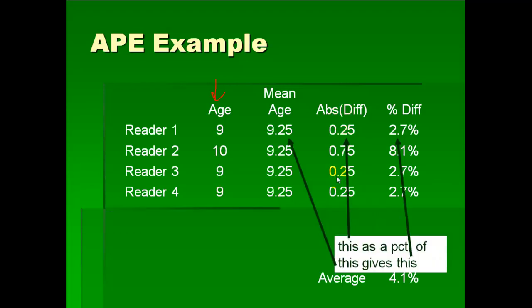And then finally, just to standardize things, you take that difference as a percentage of the mean age. So for example, 0.25 divided by 9.25 gives us 2.7%. And then the second reader, their percent difference is 8.1%.